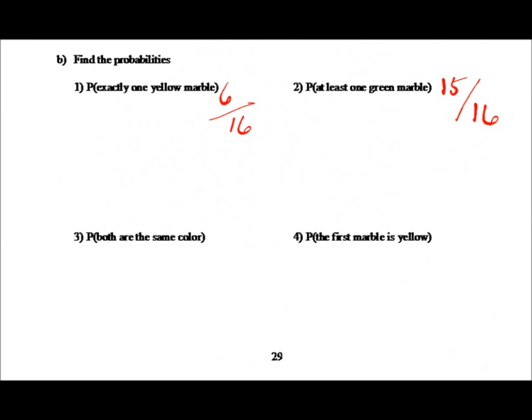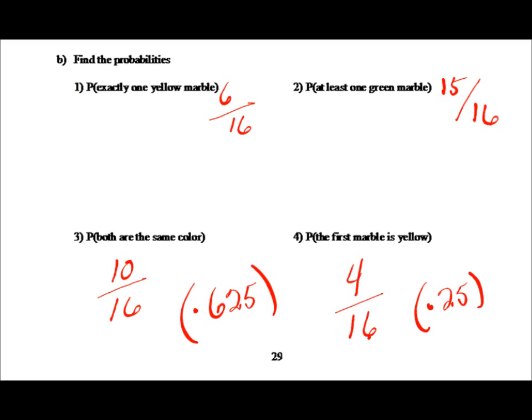Please take a moment and pause to find the probability that both marbles are the same color, and the probability that the first marble is yellow. The probability that both marbles are the same color is ten out of sixteen, or 0.625. The probability that the first marble is yellow is four out of sixteen, or 0.25.